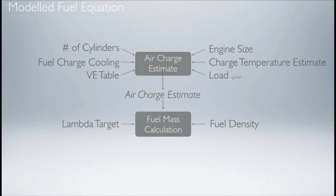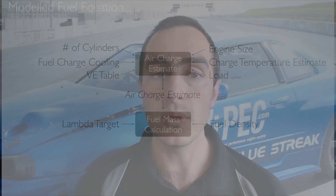The next input into the fuel mass calculation is the fuel density. Different fuels have different densities, so we need to tell the ECU what is the density of the fuel we're using — whether it's petrol or ethanol. By telling the ECU this, it's able to correctly calculate the fueling. If you're not sure what the density of your fuel is, the help file lists quite a few densities for different fuels.